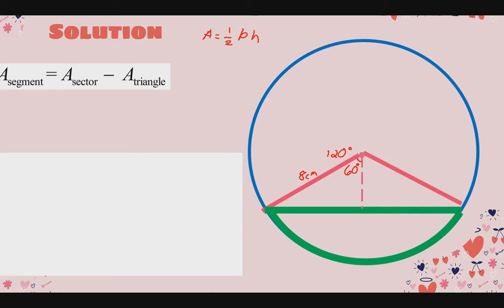When the altitude is dropped, it is perpendicular to the chord, forming a 90-degree angle. So in our smaller right triangle, we have a 60-degree angle and a 90-degree angle, making the third angle 30 degrees. This gives us a 30-60-90 special right triangle. In a 30-60-90 triangle, there is a shortcut: the shorter leg times the square root of 3 equals the longer leg, and the shorter leg times 2 equals the hypotenuse.